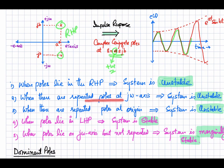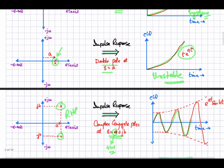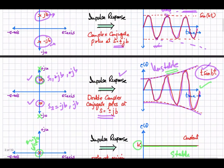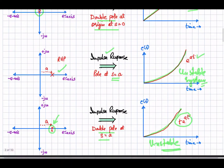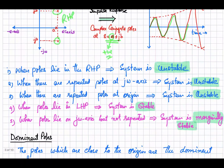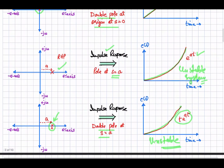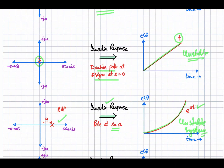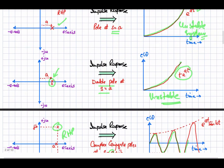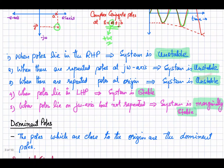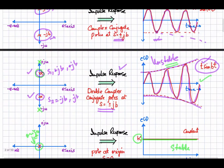If there are repeated poles at the j-omega axis, the system is unstable, as shown by the ever-increasing oscillations example. When poles are in the left half plane — a single pole at the negative real axis, a double pole at the negative real axis, or a conjugate pair — the response is bounded and the system is stable.